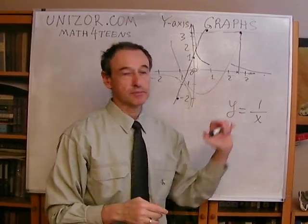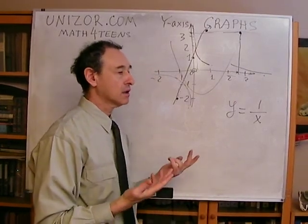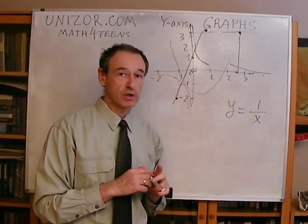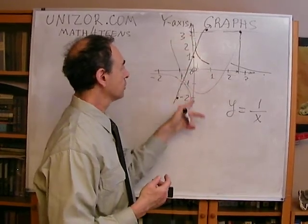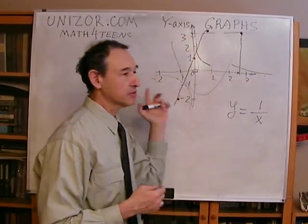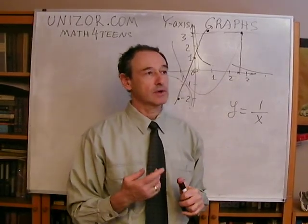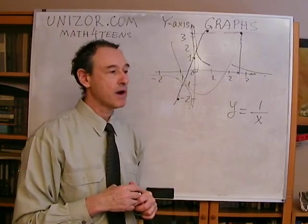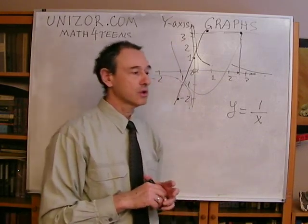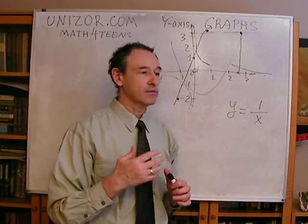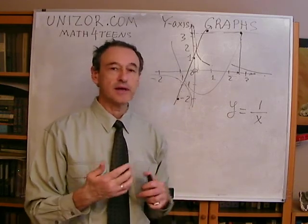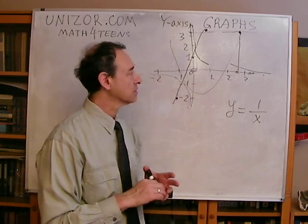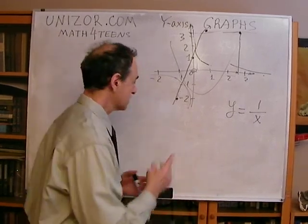We have to pay attention to where exactly our arguments are: special points and infinity. Another very important set of points are those where the function equals zero. Usually these points very clearly identify the behavior of the function — you will see that the function changes sign around these points.